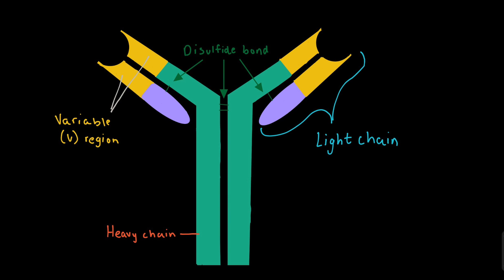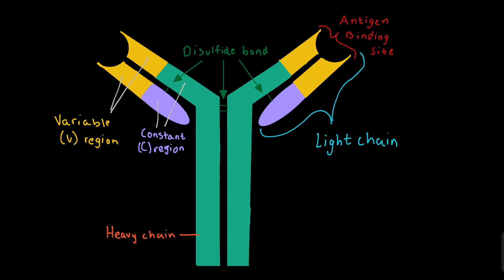Each chain will have a variable region which combines to form the antigen binding site of the antibody. Each chain will also have a constant region which determines the antibody's class or mechanism of the antibody.